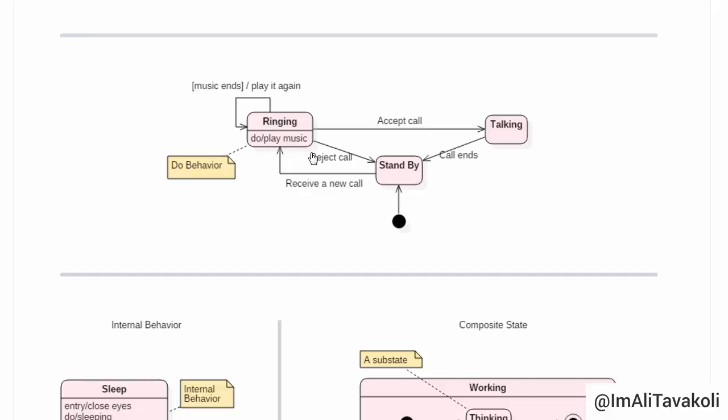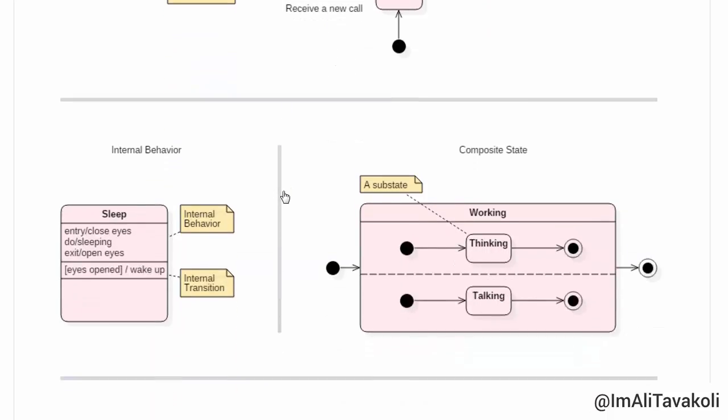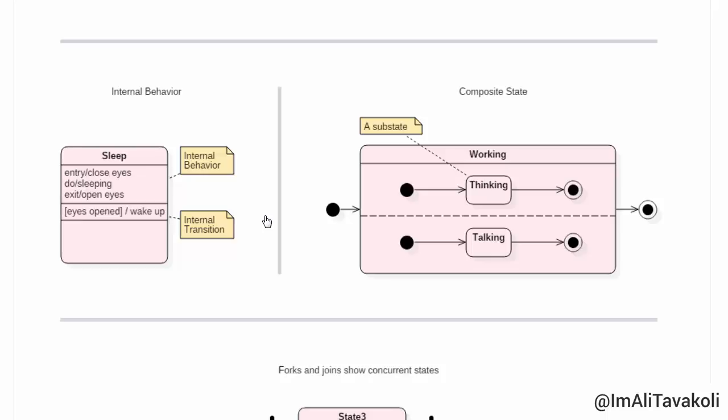if we're in this state and we reject call, we will then get to the standby state. But if we're here and accept call, we will be transited to the talking state. And after that, the call ends, we will be transited to the standby state again. So now, let's take a look at the internal behavior state.